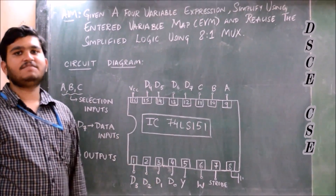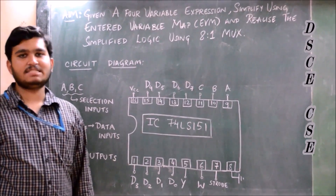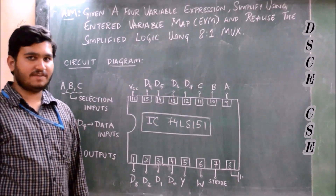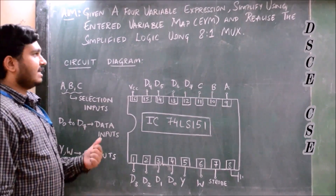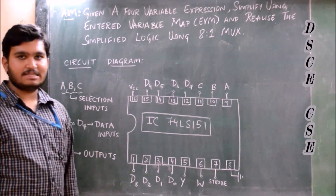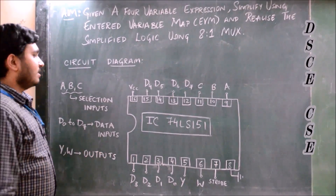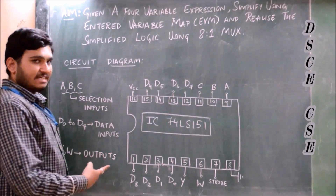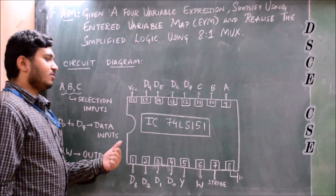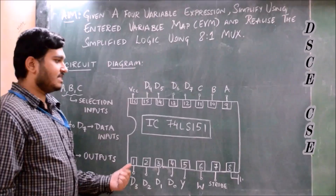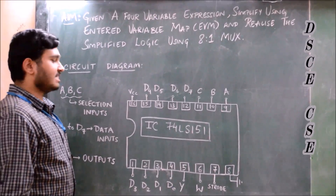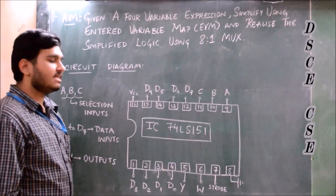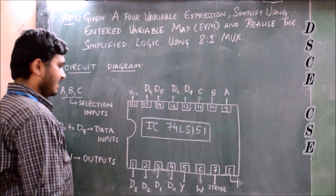In this experiment, we realize and simplify a 4-variable expression using an 8-to-1 MUX. This is the circuit diagram. We are using an IC 74LS151, which is a 16-pin IC. Let's start the connection.